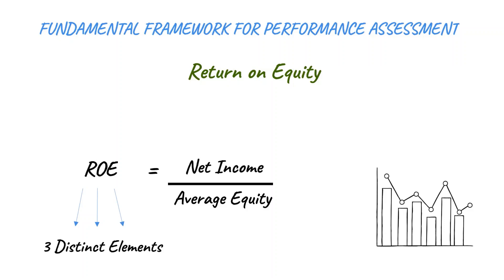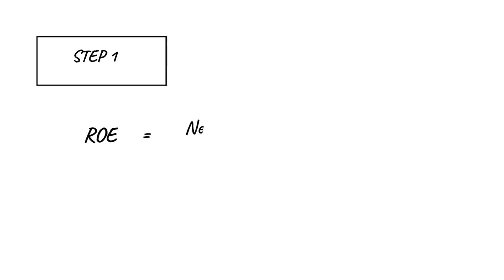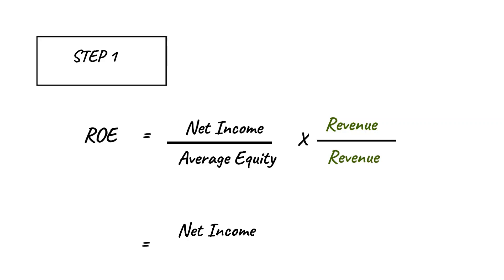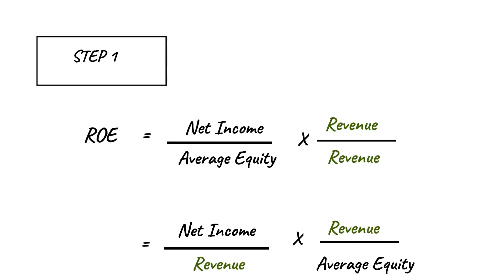The traditional approach breaks the ROE formula into its constituent parts. Return on equity equals net income divided by average equity. Now, what happens when you multiply both the numerator and the denominator with revenue? We will have two formulas: net income divided by revenue, multiplied by revenue divided by average equity. It still means the same — it still gives us the ROE.